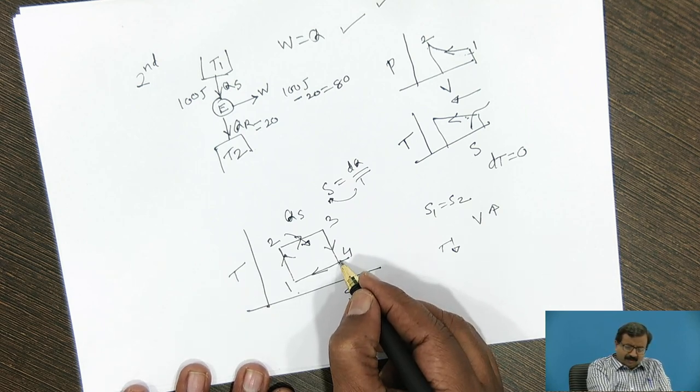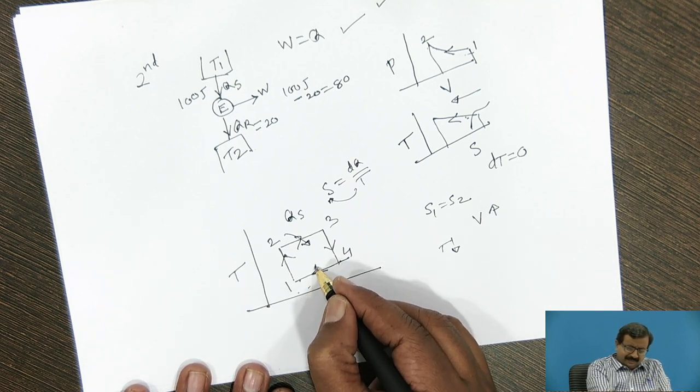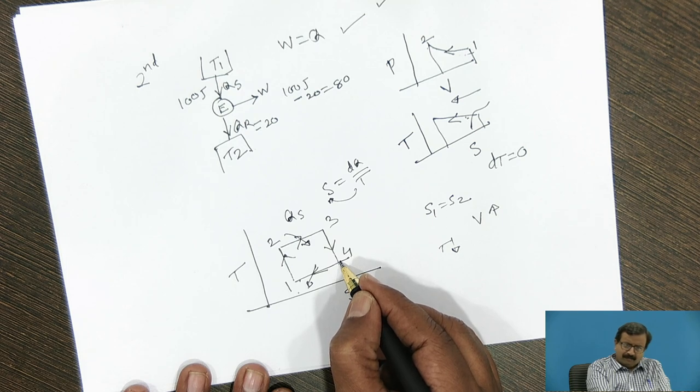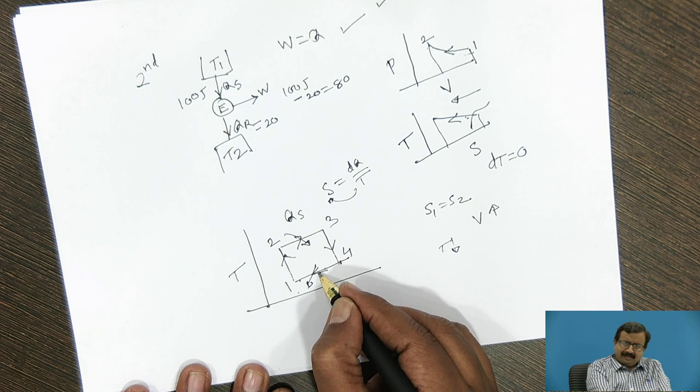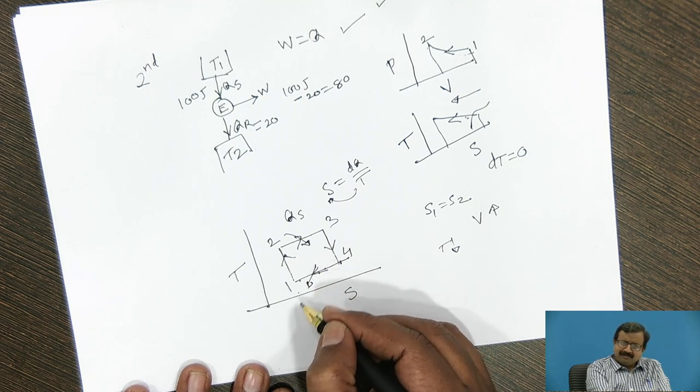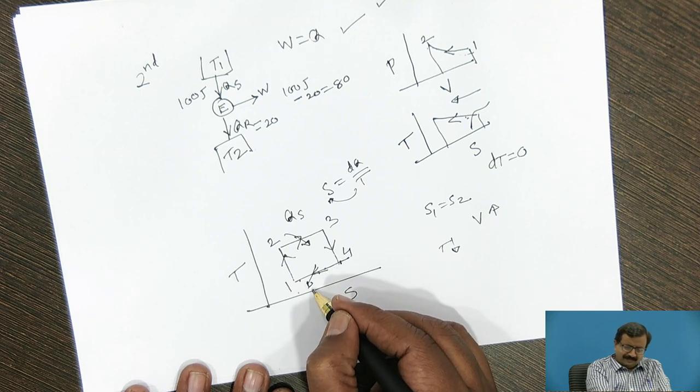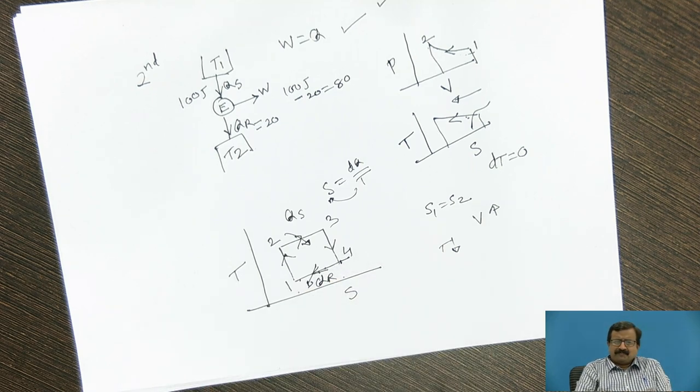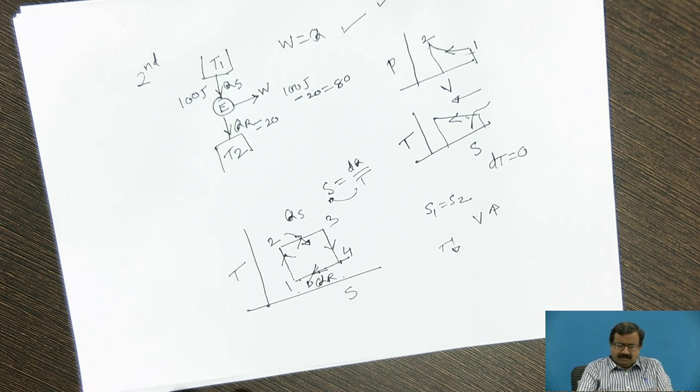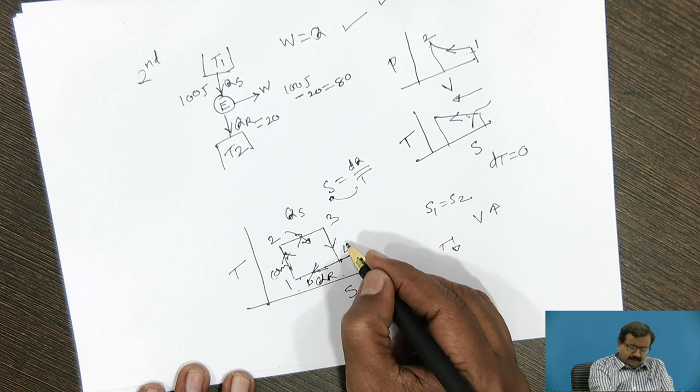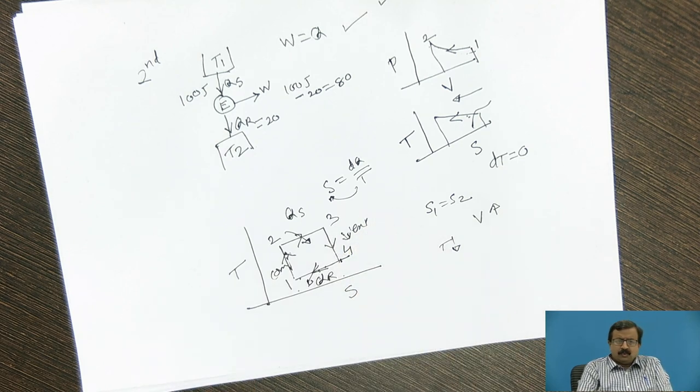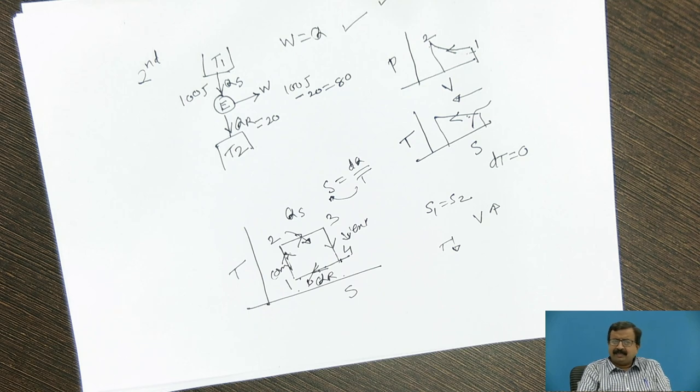In the same way, when I come from 4 to 1, it is a heat rejected because that process 4, I have some entropy. Here entropy decreases. So automatically there is an increase in temperature. That increase in temperature, I must decrease because I want constant temperature and that's why it is called as heat rejected process. So you have understood that 1 to 2 is a compression. Then 3 to 4 is expansion and 2 to 3 and 4 to 1 are heat supply and heat rejection processes.